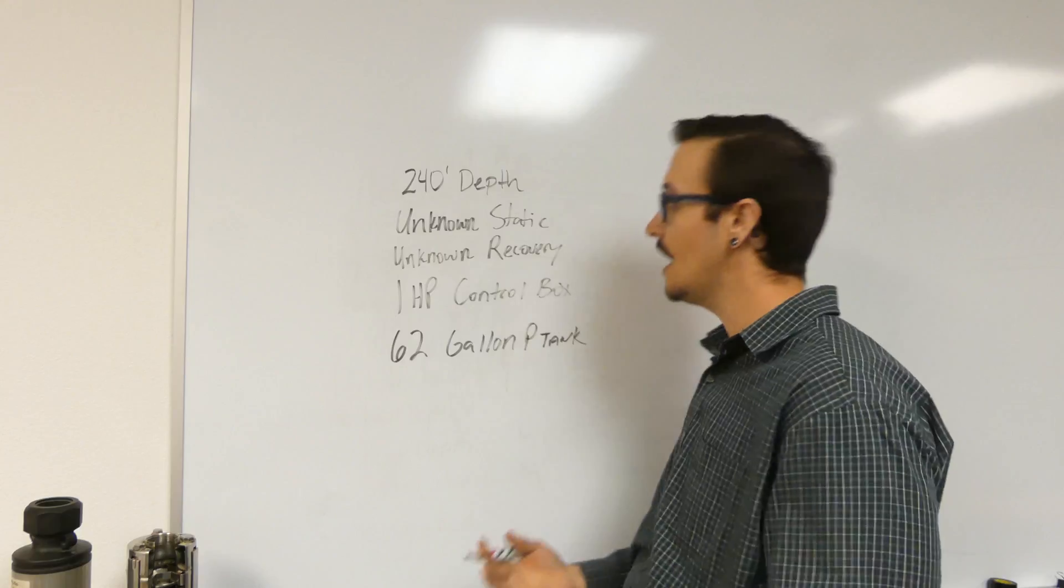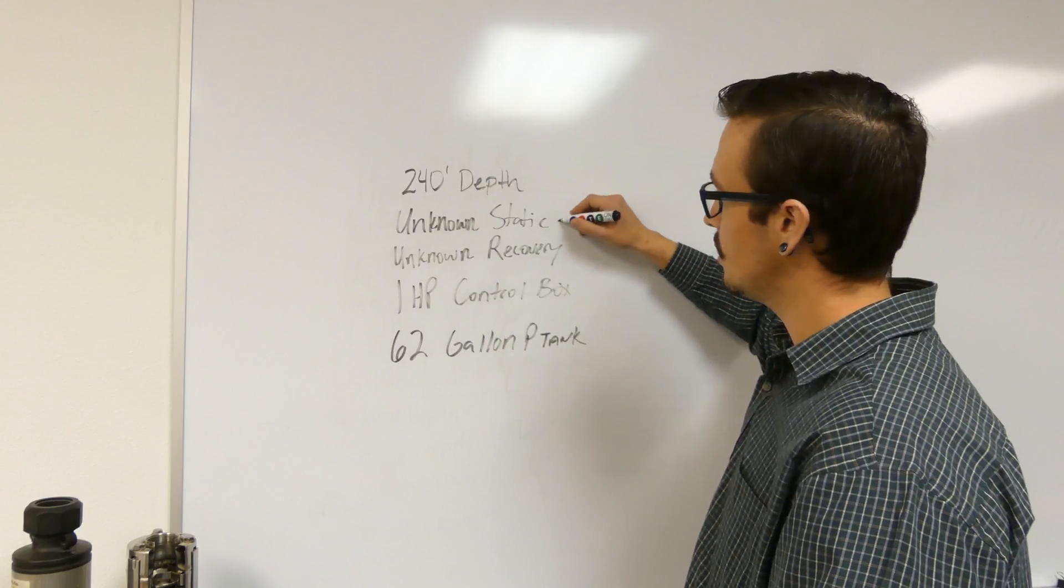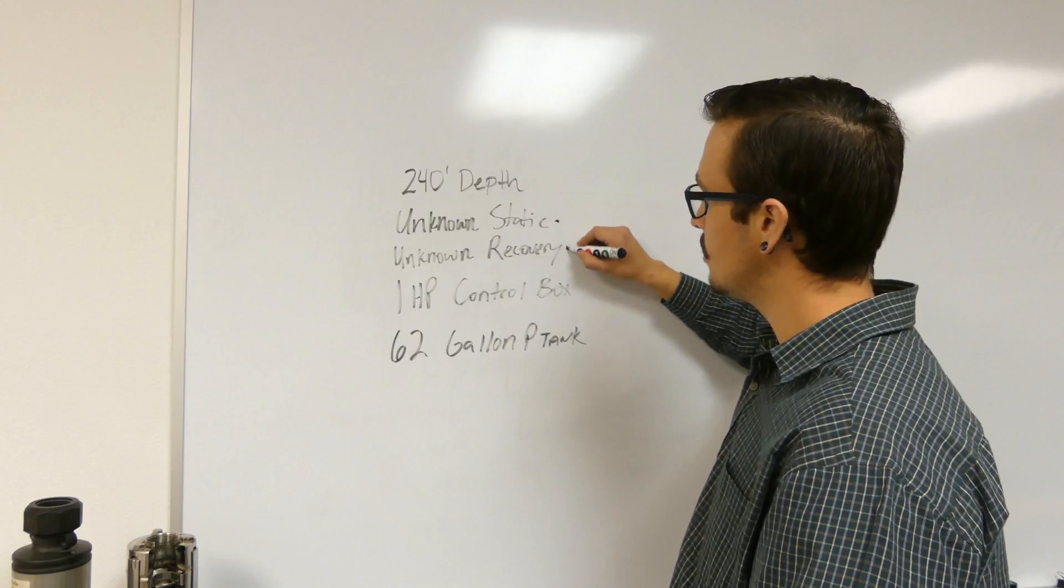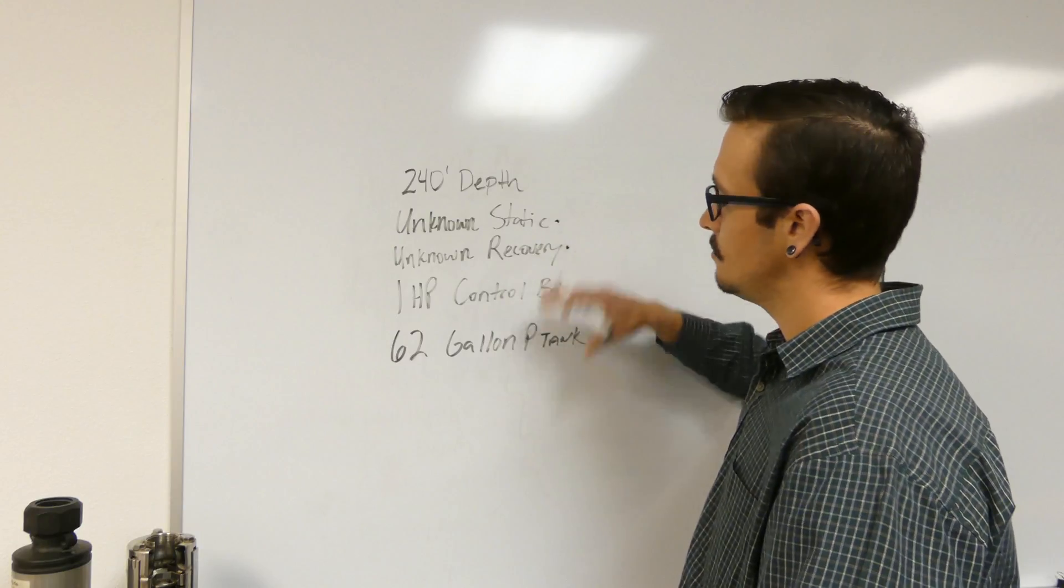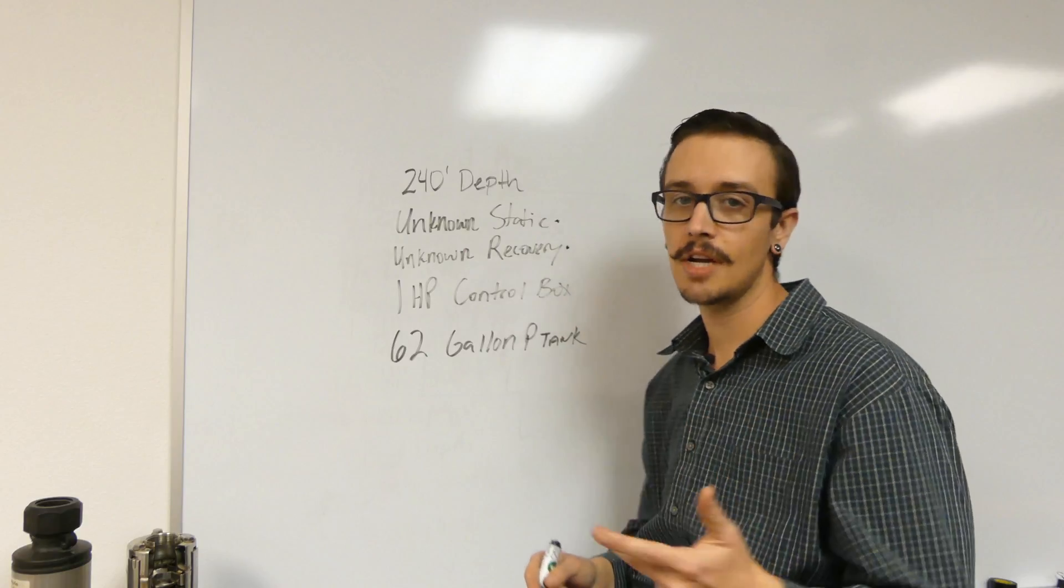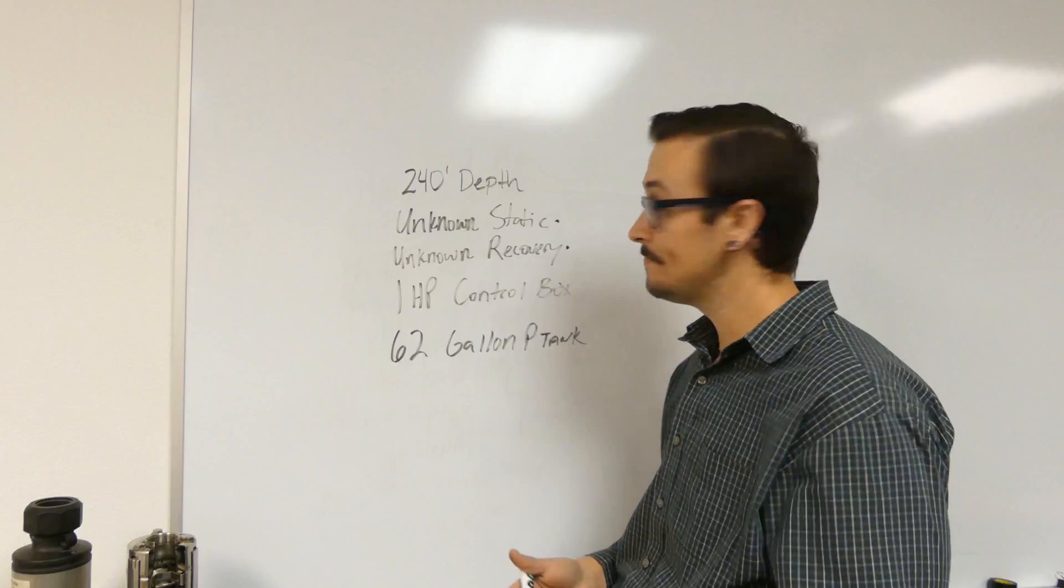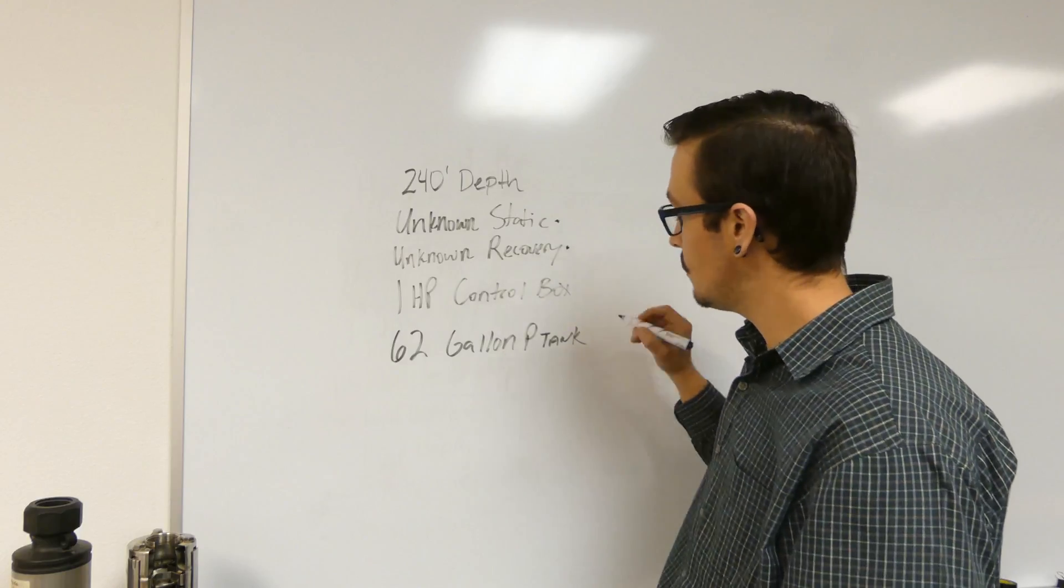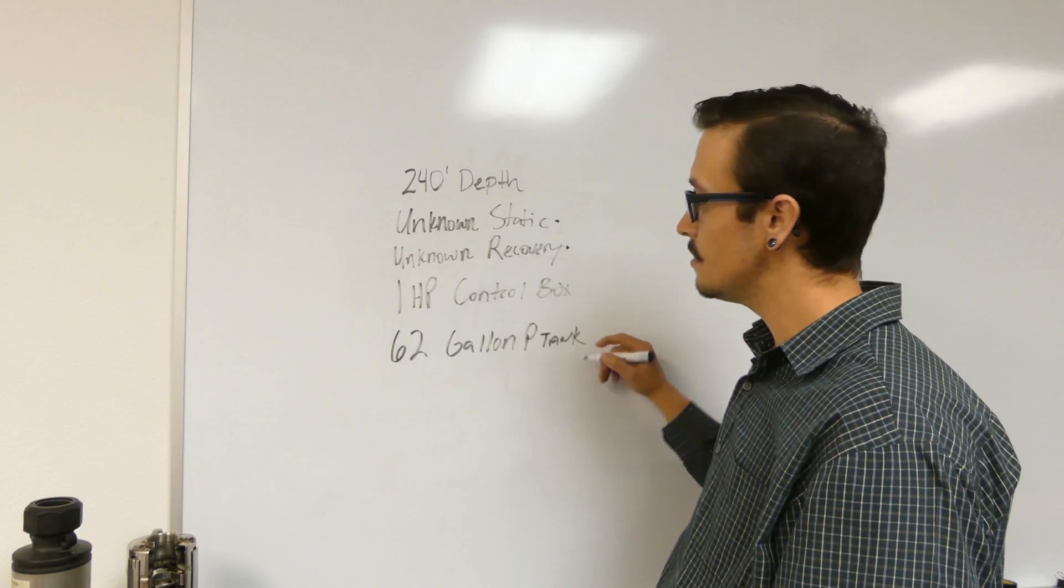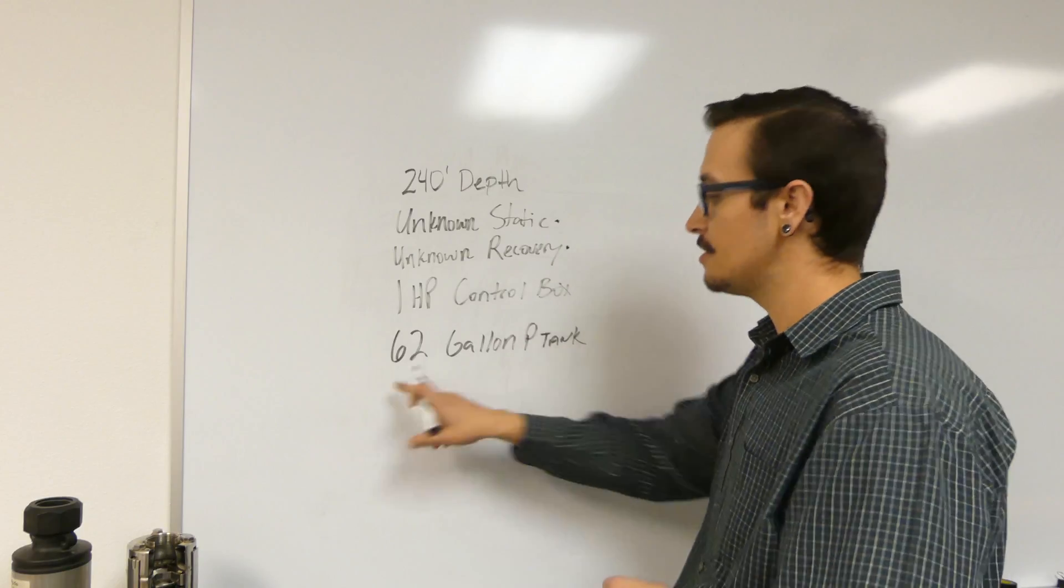So now what we need to figure out is what pump we've got. The missing information of course is unknown static water level, unknown recovery rate. So we don't really have any good things that are pointing us in a direction to know exactly what our flow rate is. What we need to look at is we've got the pressure tank here.